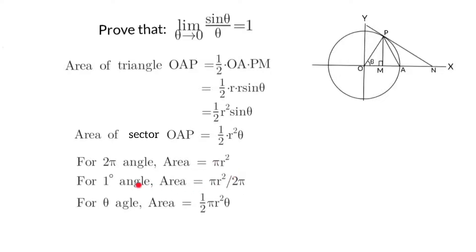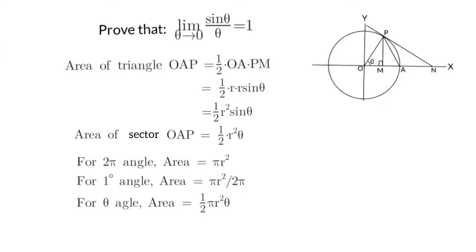To explain: for a full turn, the total angle is 2 pi and the total area is pi r squared. For one degree the area would be pi r squared over 2 pi, by the unitary method. For angle theta, the area of the sector is one half r squared times theta. So we have the area of sector OAP equal to one half r squared theta.